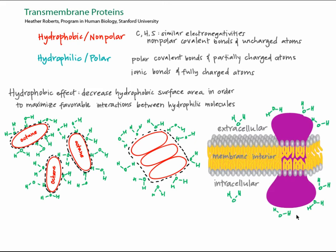As mentioned in the lipid bilayer tutorial, some proteins span membranes. Many ions and molecules cannot cross the hydrophobic lipid bilayer, and these molecules require a transport protein to allow them to pass. In this tutorial, we'll explore the chemistry of these transmembrane proteins, which must have distinct domains appropriate for the distinct environments of the extracellular space, the membrane interior, and the cytoplasm. We'll also look at the chemical principles that underlie the specificity of channel proteins.